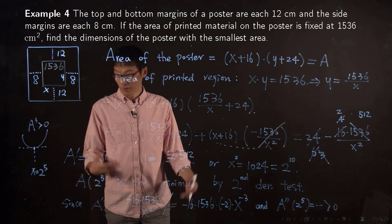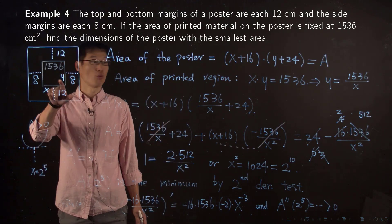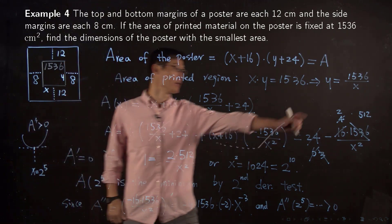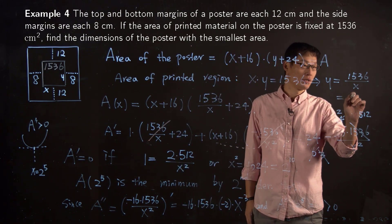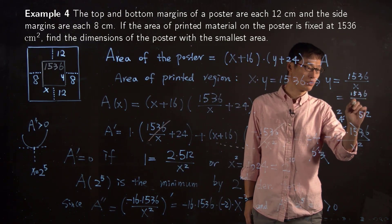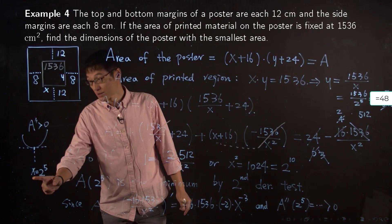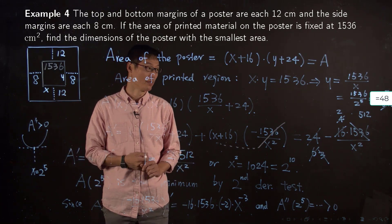For the dimensions, we already found x = 2^5 = 32. Then y = 1536 / 2^5 = 1536 / 32 = 48. So we have found x and y giving the minimum poster area.